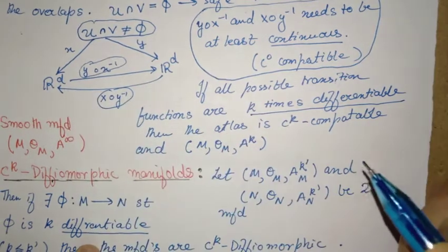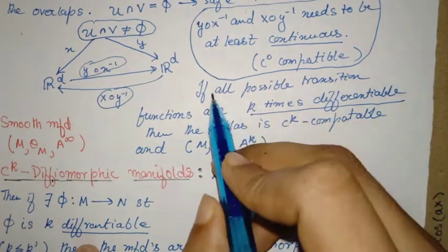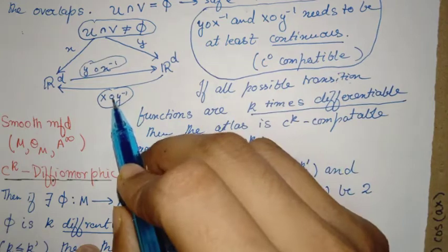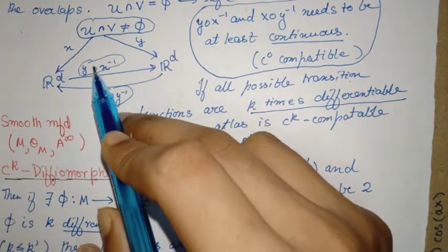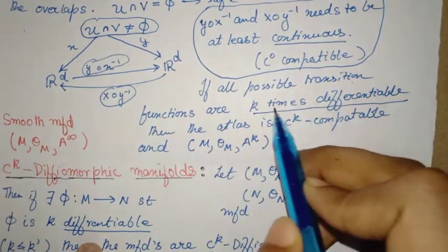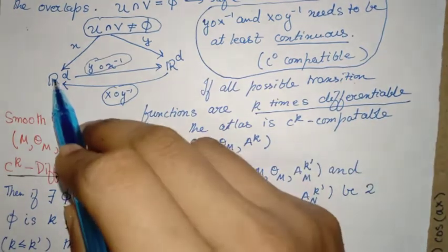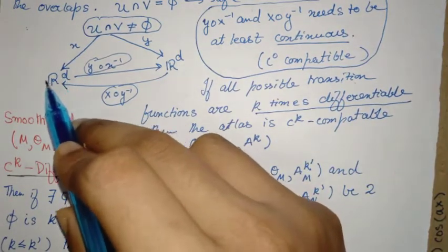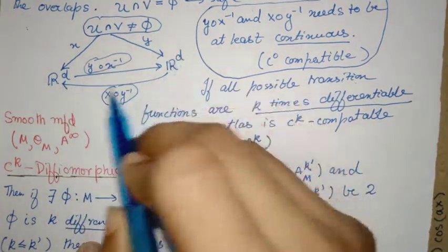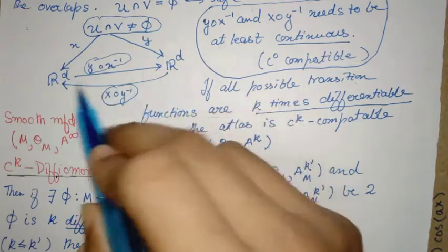Here, how you can characterize the differentiability of this is by asking the differentiability of these maps. So the point is, if all possible transition functions, where these are called the transition functions, are k times differentiable...